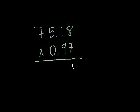You ignore the decimals when you start the problem, and you pretend like it's just a regular multiplication problem. And if you ignore the decimals, then it would be 7,518 on top and 97 on the bottom. And if that doesn't make sense, let me just show you. I'm just going to ignore the decimals and do this like a normal multiplication problem.